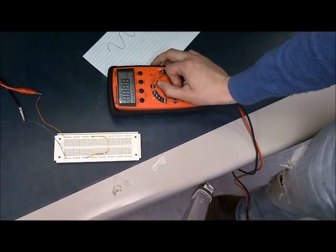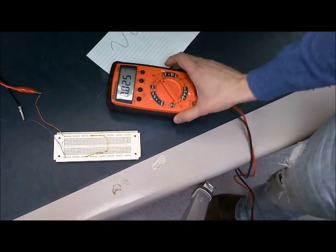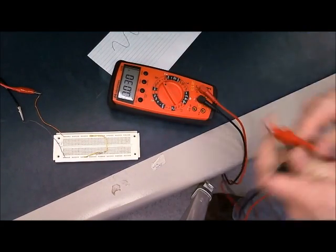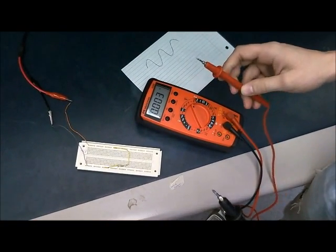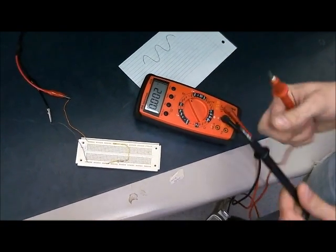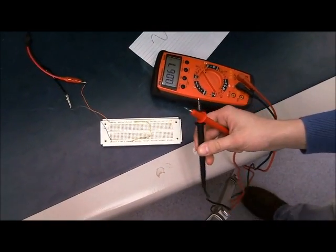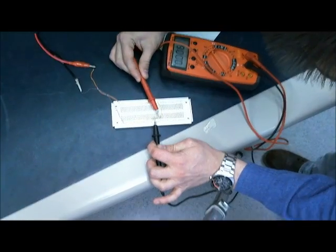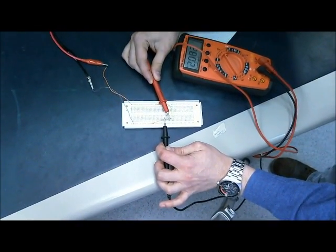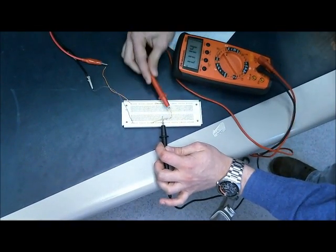The first thing we're going to do is set our multimeter to the DC voltage range and measure the DC voltage, making sure we put the probes the right way—black to black and red to red. We're getting a value of 2.08 volts.